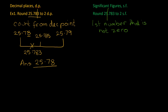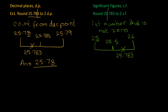From here on, it's exactly the same process as we used for decimal places. We draw the number line section — 25 at the start, then we add one to get 26 at the other end. Halfway will be 25.5. Then we mark 25.783 on the number line roughly. Asking which end it's closest to, it's closest to 26, so that is our answer this time.